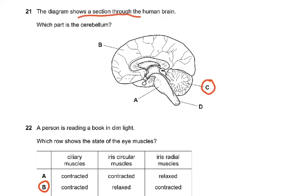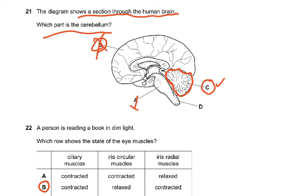Question 21: the diagram shows a section through the human brain — which part is the cerebellum? The cerebellum is the leaf-like part — answer C. B was the cerebrum, A was the medulla, and B also indicated the spinal cord.